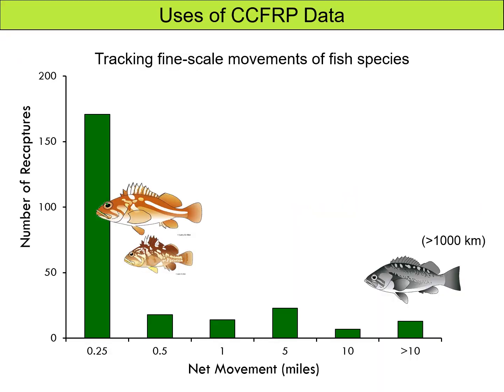Apart from being able to separate out events such as recruitment and responses to environmental variation, the tag and release component of our CCFRP program gives us the opportunity to learn about growth and net movement of nearshore fish species. Here you can see there is a wide range in net movements observed from recaptured fishes. For instance, copper and gopher rockfish on the left tend to exhibit net movements less than a quarter mile, whereas black rockfish on the right move much greater distances of up to 578 miles. This information has implications for the design of MPAs and their sizes, and also provides basic information about the ecology of these species.